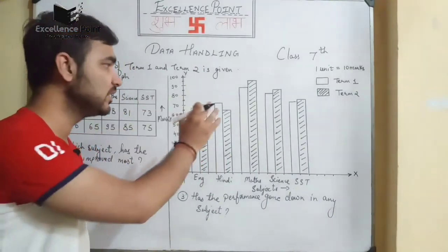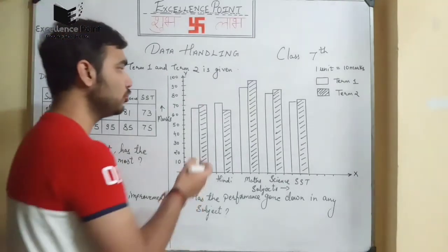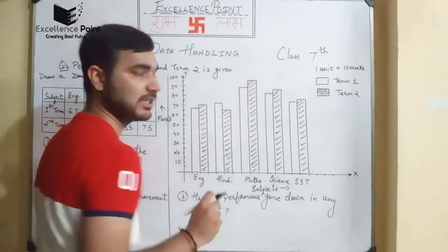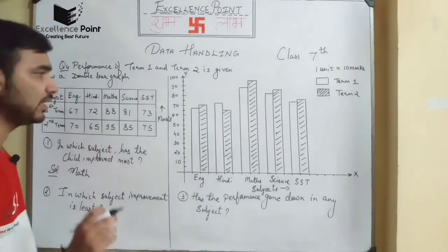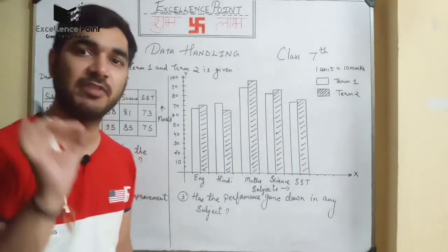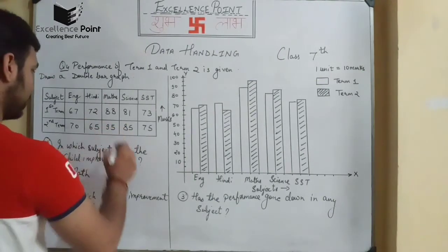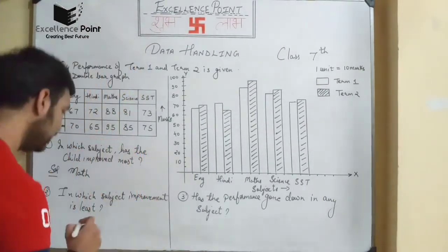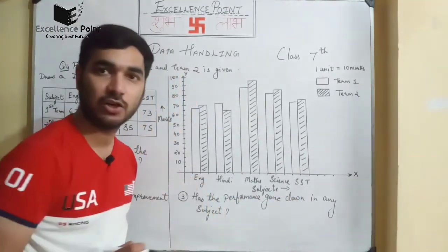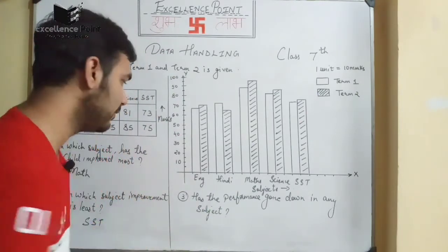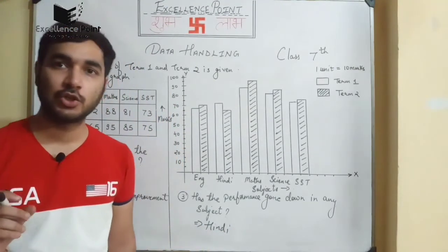We have completed the graph. Based on it, we answer the questions. In which subject has the child improved the most? The most improvement is in Maths. In which subject is the improvement least? The gap is very small — SST shows the least improvement. Has the performance gone down in any subject? Yes, in Hindi, Term 2 is less than Term 1. We have finished all the questions.